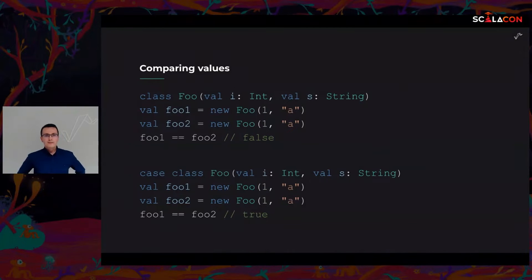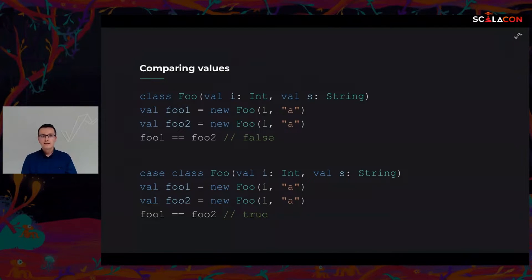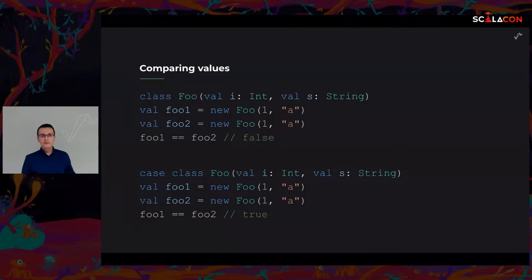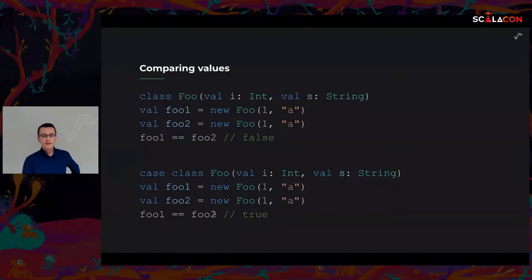In Scala, we can compare values either by their identity. When we have a normal class with some fields and we create two instances of this class which are identical, but actually they're not the same object, so they are not equal. However, if we define a case class, then instances of this case class are compared by the values that are parts of this class. So two instances of the same class can be equal even though they're not the same instance of an object.